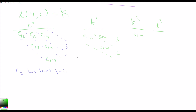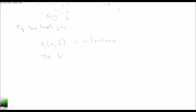So this is an example of a nilpotent Lie algebra. In particular, we can show that n(n, F) is nilpotent — the lower central series terminates at k to the n.